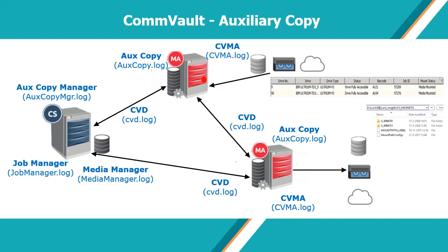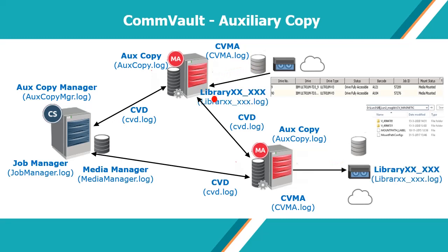The Auxiliary Copy Process on the Source Media Agent sends data over the pipeline to the Destination Media Agent, and the Auxiliary Copy on the Destination Media Agent keeps track of the data sent over the pipeline. All communication and data transfer happen via CVD. The library module is in charge of the library handler or robotics on both the source and destination media agents.